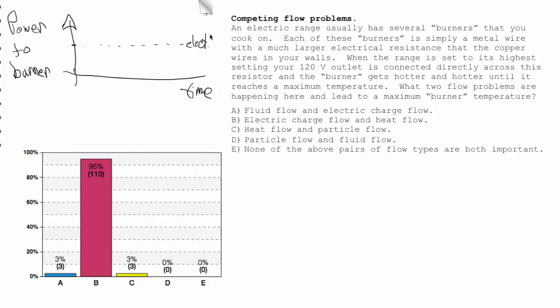I squared R is the power that's going into the burner all the time. So what happens to the burner is that the temperature goes up. Temperature of the room does not go up.